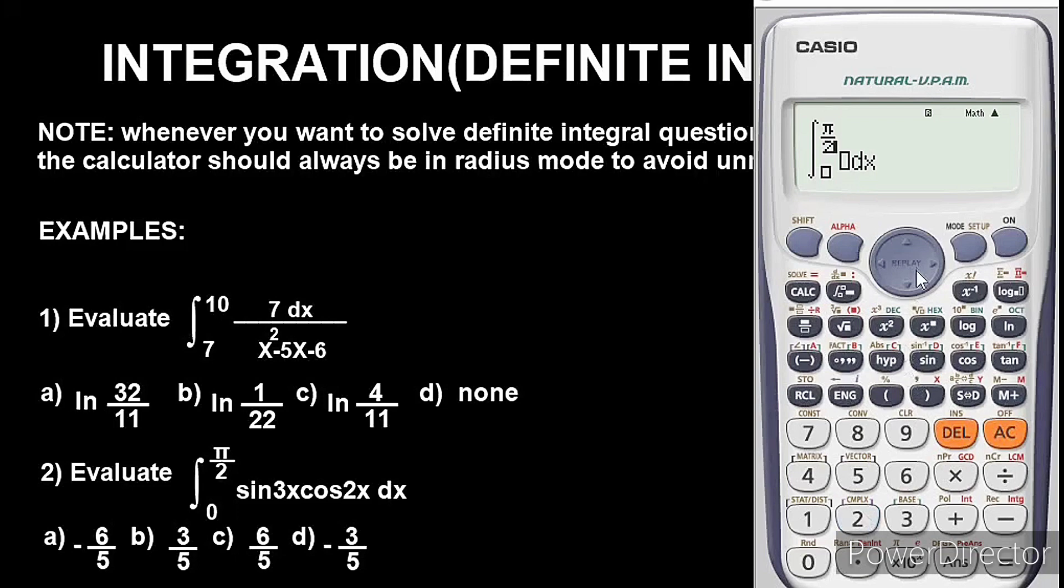You come down to the lower limits, the lower limit is zero. You move your cursor to this empty box and input the values there. We have sine 3x, alpha x, close the brackets, cos 2x, alpha x, close the brackets.